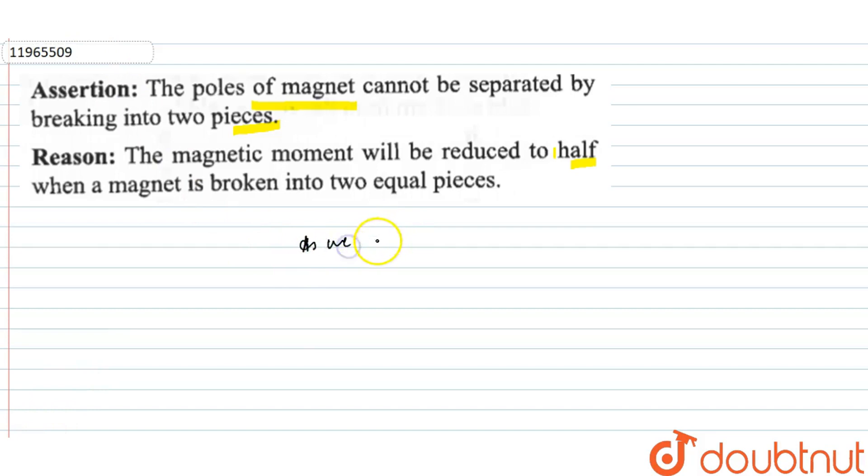As we know that magnets have always dipoles. They exist as a dipole. That is, if a magnet is there, there has to be its north and south pole. Magnetic magnets exist as a dipole. That's why the poles of a magnet cannot be separated.